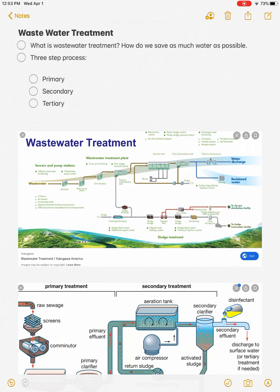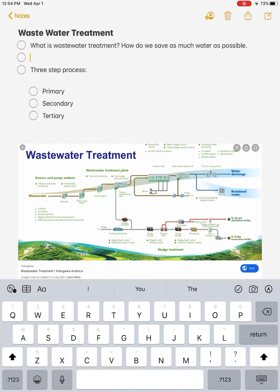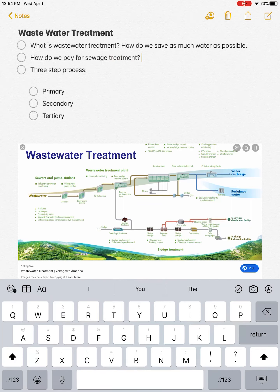In our municipal water supply, we treat municipal — meaning city — water. Every city essentially has either a tie-in with another city or some way of treating the water themselves. How do we pay for sewage treatment? If you look on your water bill, you will notice water usage — that's the water coming into the house — and you'll also see sewage on there.